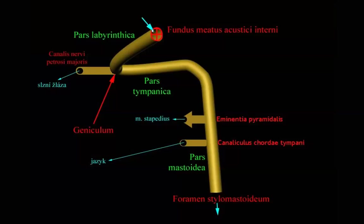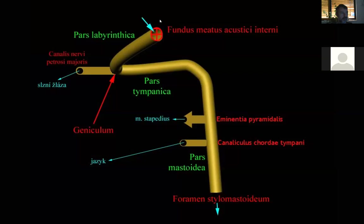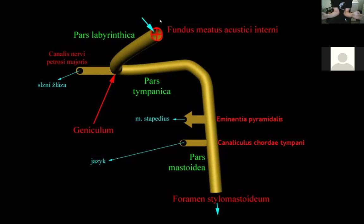From here starts the facial canal. The canal has a shape I'll describe with an analogy: imagine trying to swim. The first part goes ventrolaterally — like your arms extended forward when learning to swim. You can see the hands and forearms going in a ventrolateral direction.